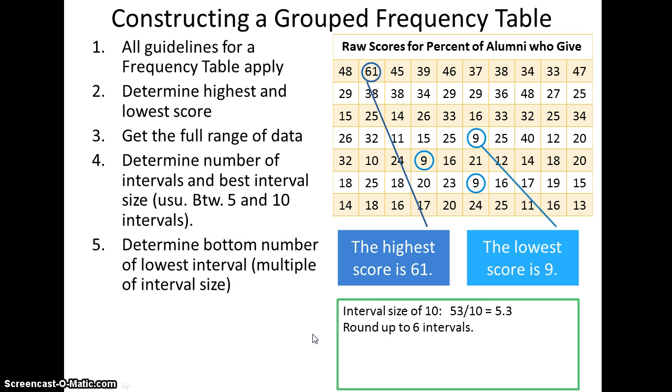The next step is to determine what is the bottom number of the lowest interval, and it should be a multiple of our interval size. Our interval size is 10, so whatever that bottom number of the range for the lowest interval should be a multiple of 10. The lowest interval in this case should start at 0.